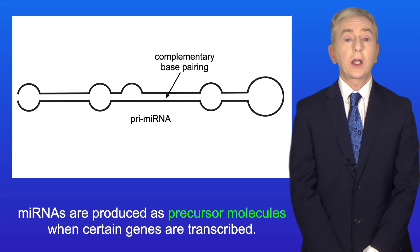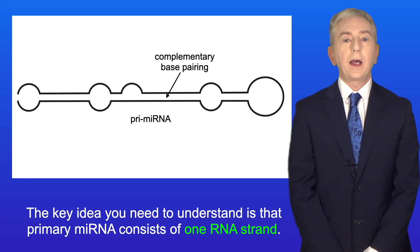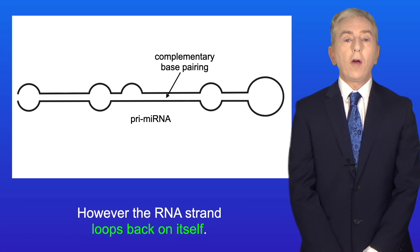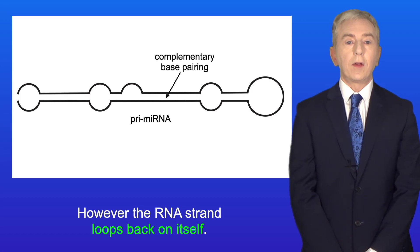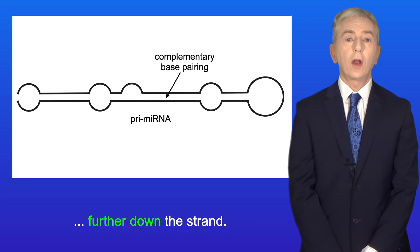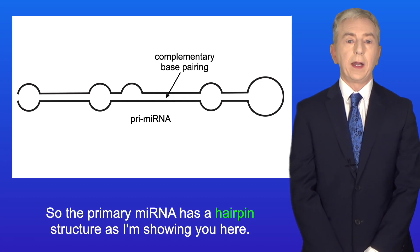Now, miRNAs are produced as precursor molecules when certain genes are transcribed. These precursor molecules are called primary miRNA, or pri-miRNA. And the key idea you need to understand is that primary miRNA consists of one RNA strand. However, the RNA strand loops back on itself, and bases in the RNA strand hydrogen bond with complementary bases further down the strand. So, the primary miRNA has a hairpin structure, as I'm showing you here.